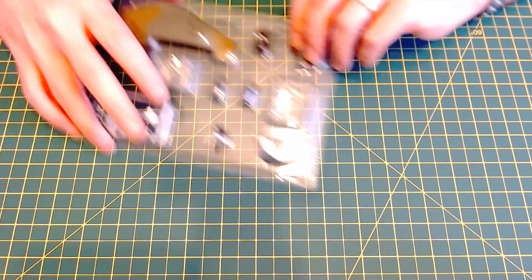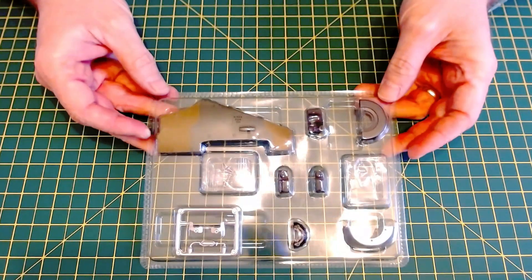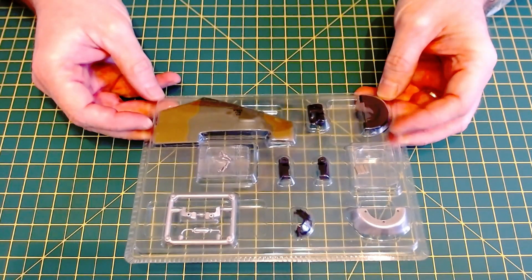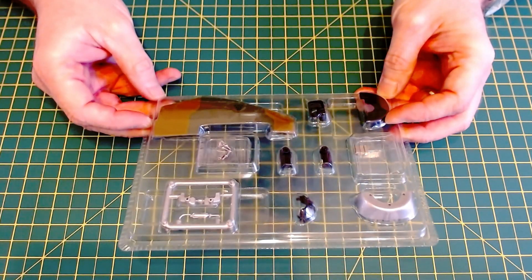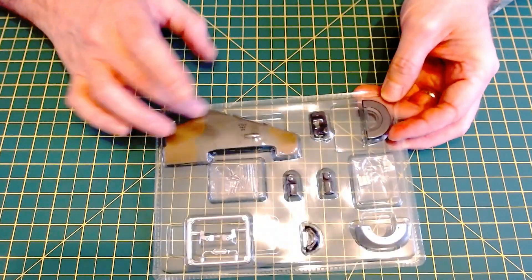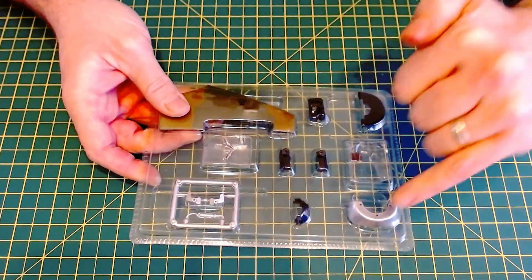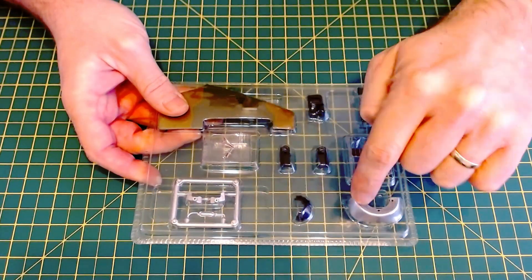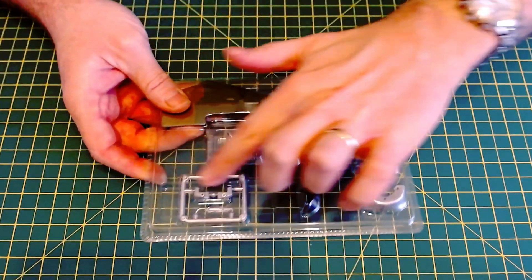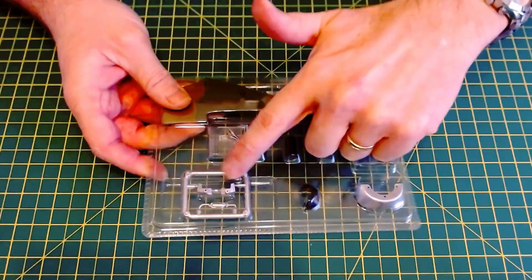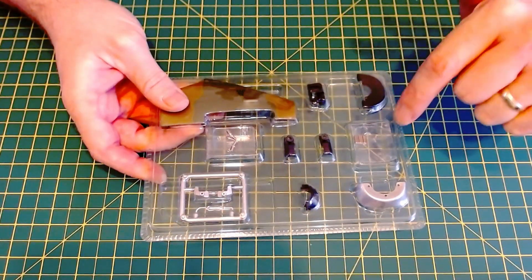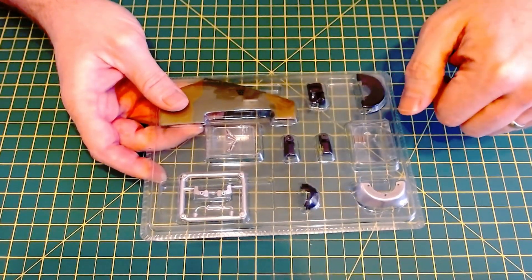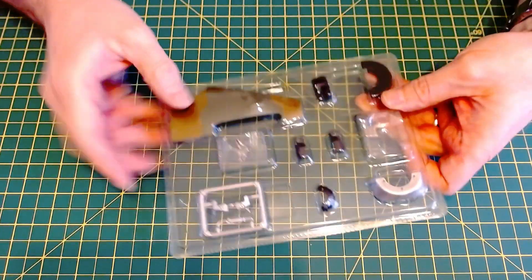Right now we're going to get straight into the build for issue four of Build the Spitfire Mark 1A. So the parts for issue four look a lot like that. I haven't taken them out of the plastic packaging yet, but you've got part of the fuselage, part of the left-hand fuselage, some of the engine mounts, some of the parts that look like they're on sprues as well. We're going to need screw cutters for that.